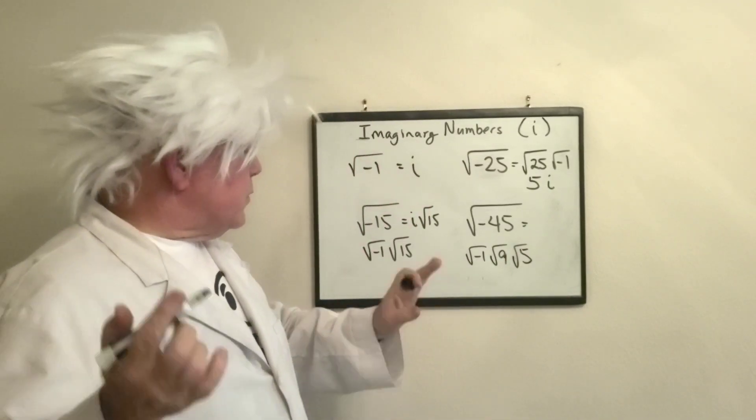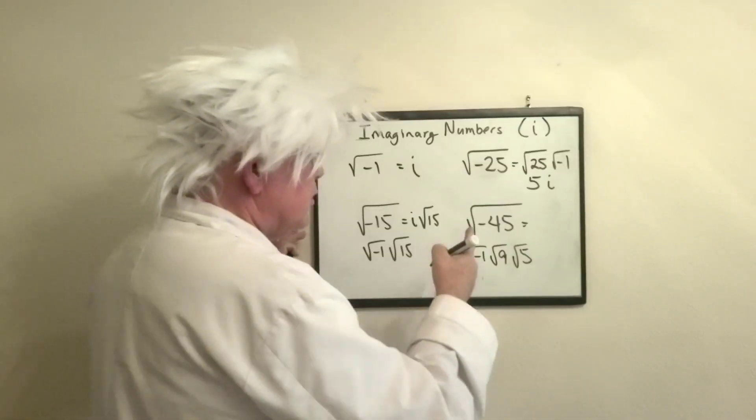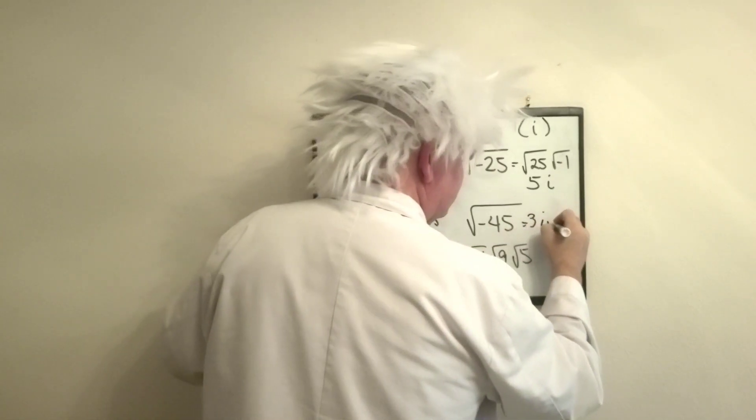Now, the way this goes, order says number, letter, radical. So square root of 9 is 3. Square root of negative 1 is i. Square root of 5.